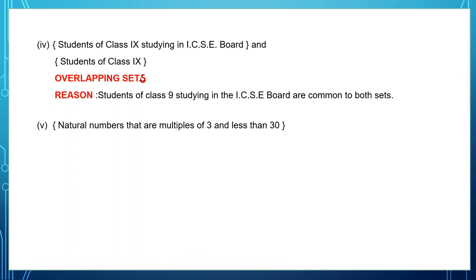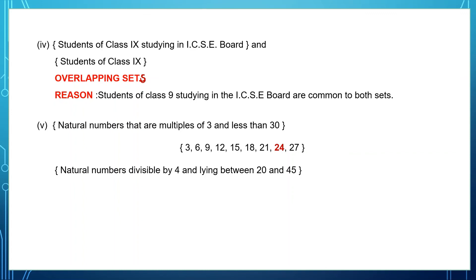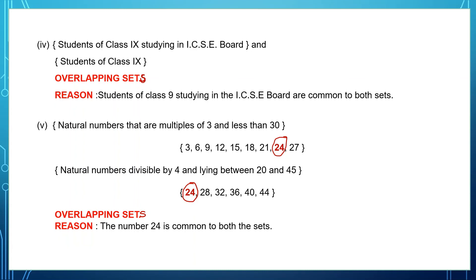Next one: natural numbers that are multiples of 3 and less than 30 — that is 3, 6, 9 up to 27 — and natural numbers divisible by 4 lying between 20 and 45. The number 24 is common to both sets, so these are called overlapping sets because 24 appears in both.